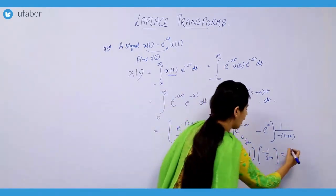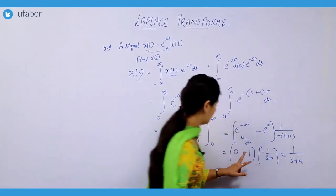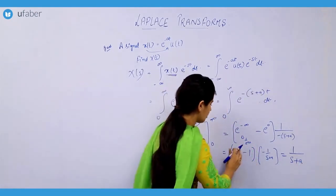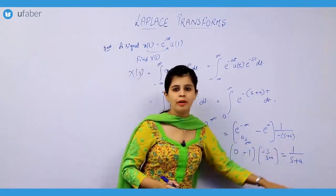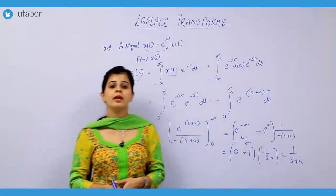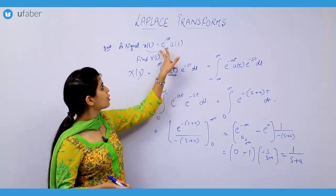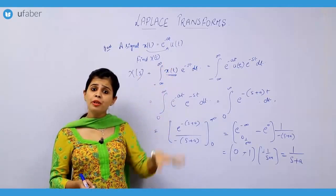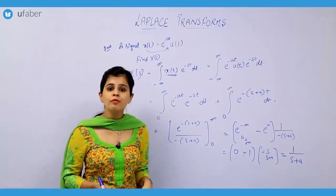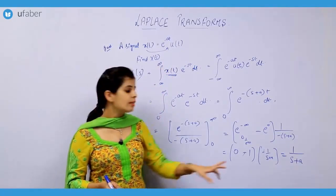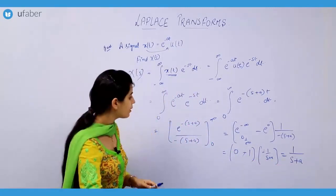From this I am getting 1 upon (s plus a) — the two minus signs cancel and we are left with 1 upon (s plus a). This is the Laplace transform of this particular function. Now we have to define the region of convergence — the region for which this Laplace transform exists.